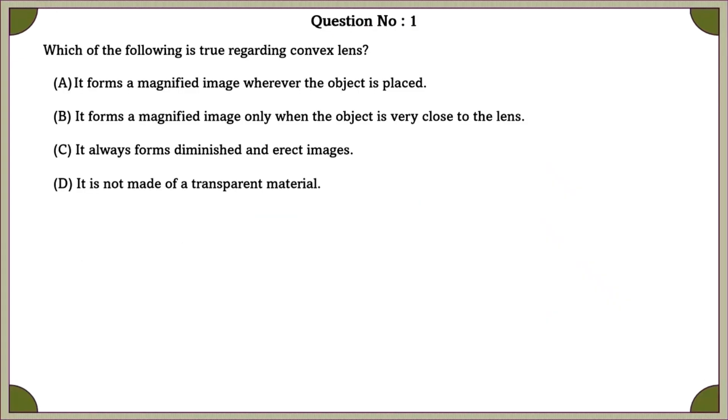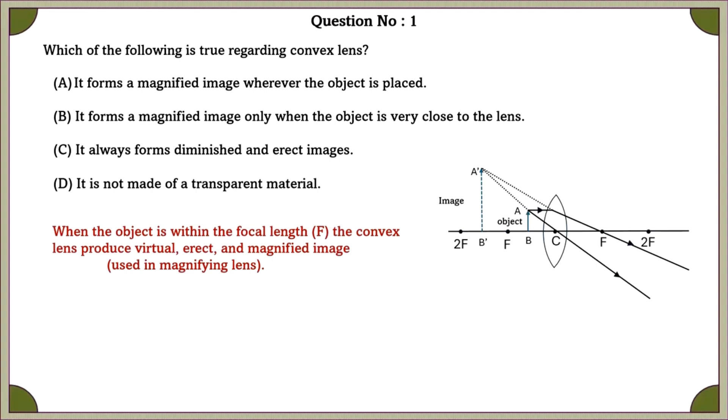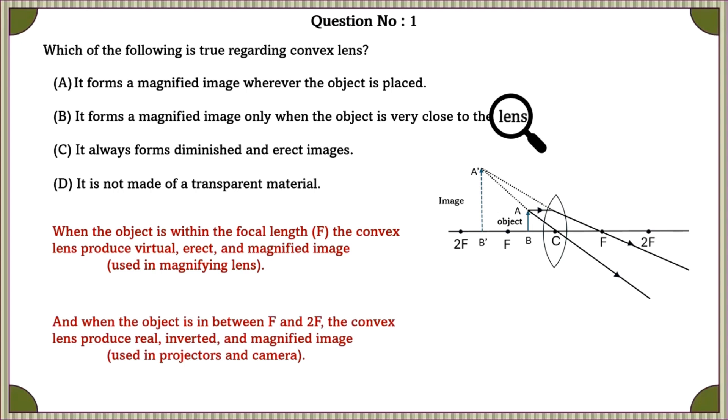Question number 1, which of the following is true regarding convex lens? When an object is within the focal length, the convex lens produces virtual, erect and magnified image used in magnifying lenses. And when the object is in between F and 2F, the convex lens produces real, inverted and magnified image used in projectors and cameras.